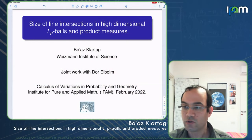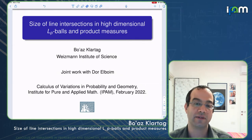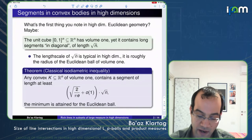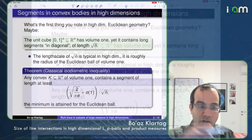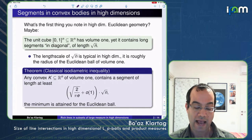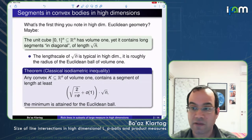The unit cube in high dimensions contains long segments. If you have the unit cube [0,1]^n in high dimensions, it is of volume one, but it contains long segments of length √n in the diagonal from the point (0,0,...,0) to (1,1,...,1). This length scale of √n is quite typical in high dimensions and appears in many places.